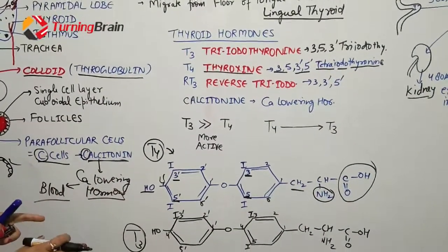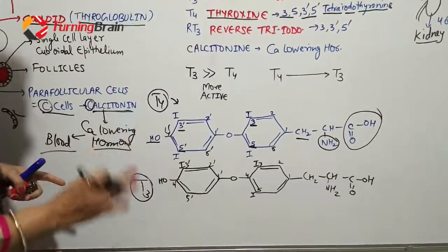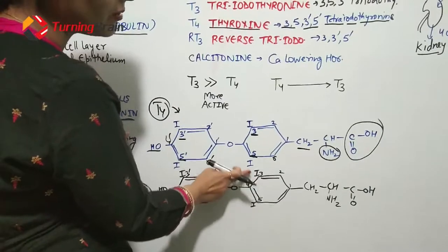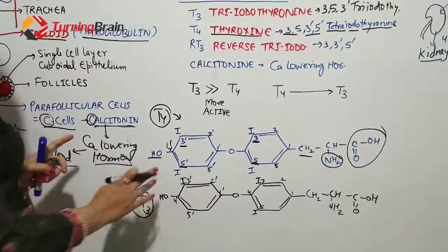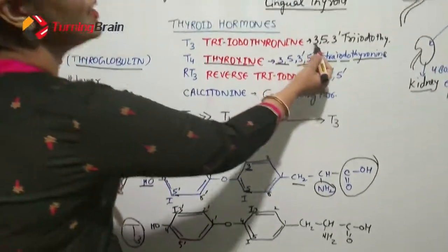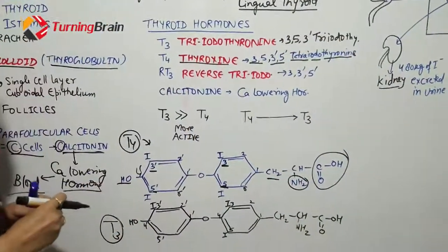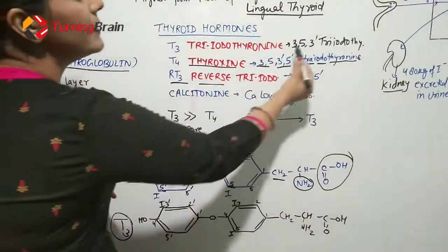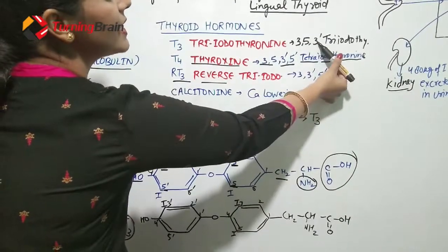For T3, the difference is that only three iodine atoms are attached at positions 3, 5, and 3' — position 5' does not have iodine attached. Therefore its name is 3,5,3'-triiodothyronine. Reverse T3 (RT3) is the reverse form of triiodothyronine.